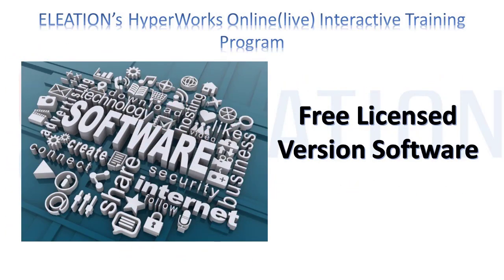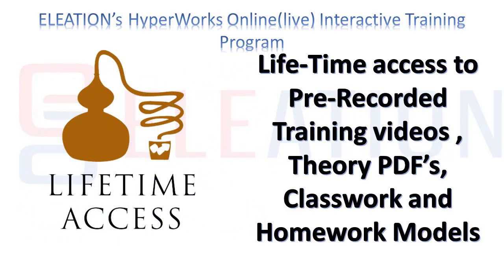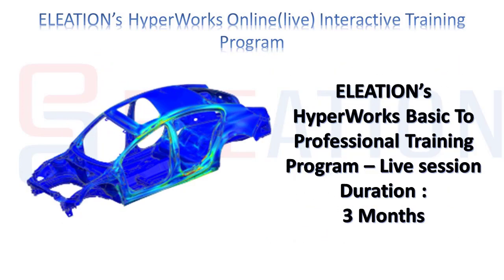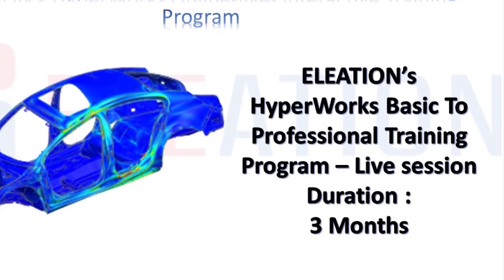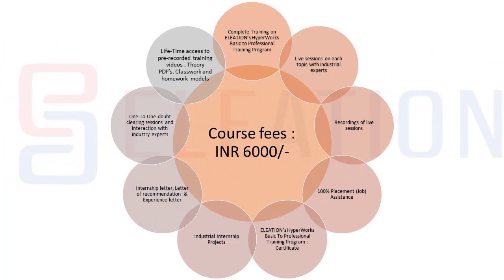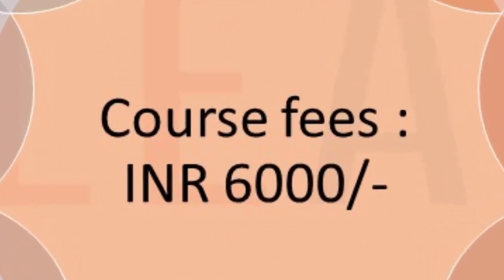We will also provide free licensed version software. You will have lifetime access to complete course content, pre-recorded videos, theory PDFs, and classwork and homework models. The course duration is 3 months. Course fees for Eliation's HyperWorks Online Live Interactive Training Program is Rs. 6,000.